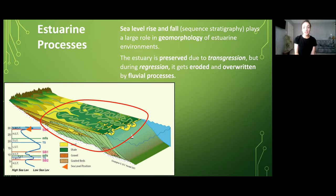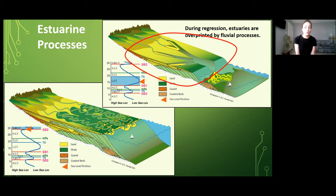However, when we get regression occurring after this transgressive sequence we see fluvial processes overprinting a lot of the estuarine deposition. This is why we know that estuarine deposition and preservation dominates during transgressive events.